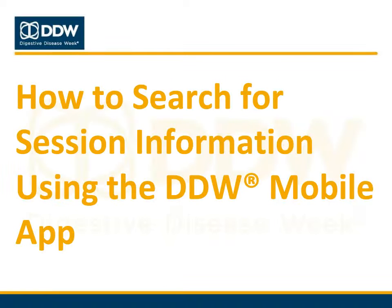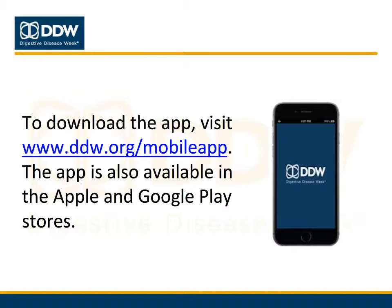This brief video will show you how to search for session information using the DDW 2017 mobile app. The DDW 2017 mobile app is available for free download at ddw.org/mobile-app. You can also download the app from the Apple and Google Play stores.